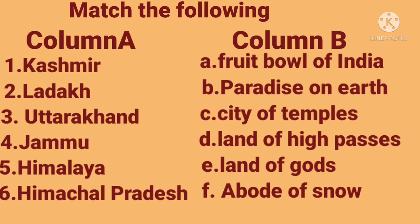Next we have match the following, children. Column A: Kashmir, Ladakh, Uttarakhand, Jammu, Himalaya, Himachal Pradesh. Column B: Fruit ball of India, Paradise on earth, City of temples, Land of high passes, Land of gods, Abode of snow — that is, House of snow.